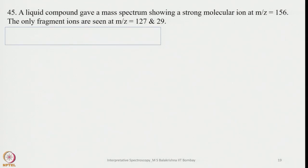Another example: a liquid compound gave a mass spectrum showing a strong molecular ion at M/Z equals 156. The only fragment ions are seen at M/Z equals 127 and 29. The moment we talk about 127, one element comes to our mind having atomic weight of 127, that is iodine. So probably iodine is there in this molecule. First we take 156 divided by 13 and it divides completely. So no remainder, 12 is there, so this is C12 and H12. Now let us say if you want to add iodine, how much I should take out for iodine? Iodine 127 means C10H7.